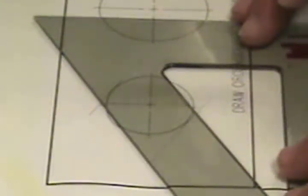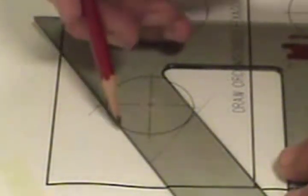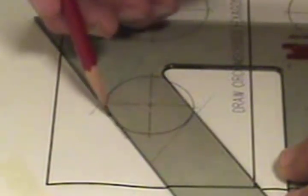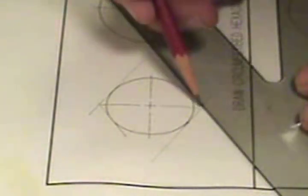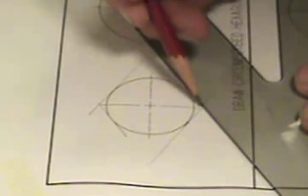Drawing another 30 degree line. Then flipping my triangle over, and doing the same thing on the other top part. And then coming down and drawing the other 30 degree angle on the bottom part.